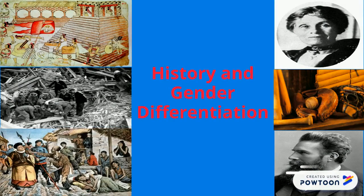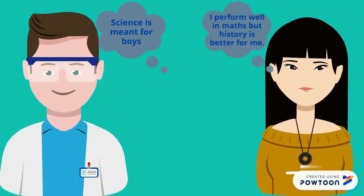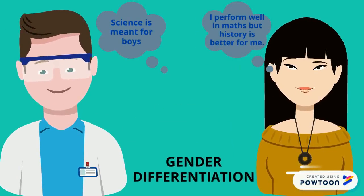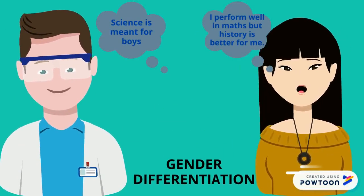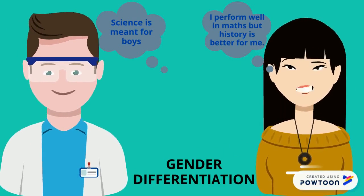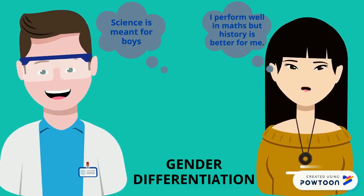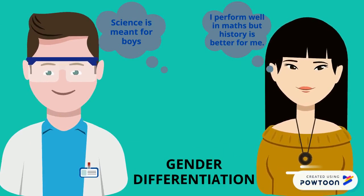History is a part of each genre of subjects, the subjects which are part of humanities education. There are differences made between males and females on the basis of their gender. Men are always thought to outperform in science and technology, while females are considered better in history, geography, etc., irrespective of their interests.